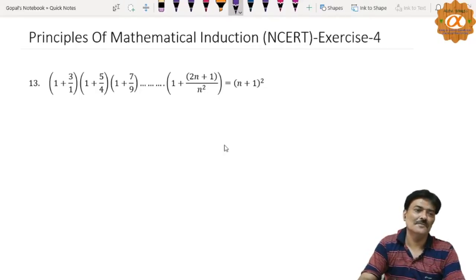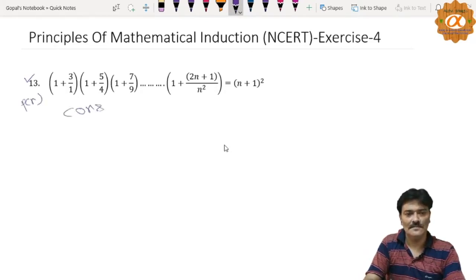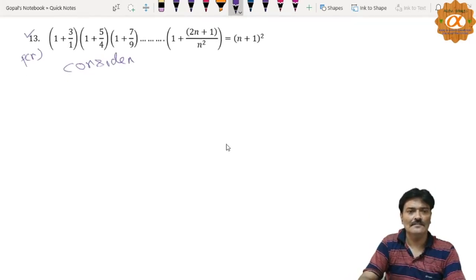Okay, question number 13. This is statement P(n). Now consider LHS: 1 plus 3 by 1, that is equal to 1 plus 3, that is equal to 4.